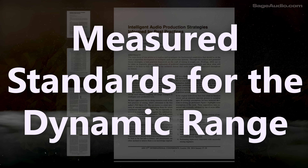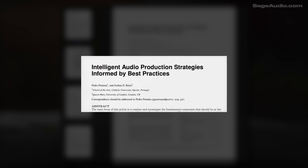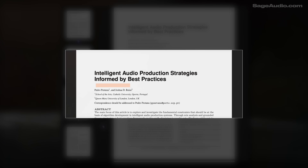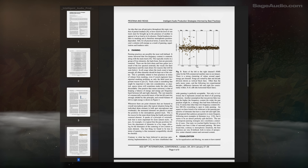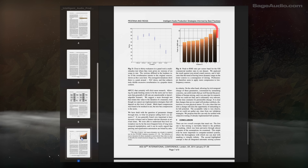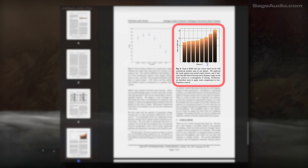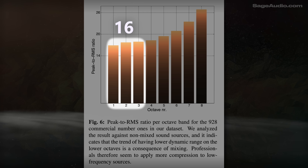First, let's consider measured standards for the dynamic range. In a 2014 paper written by Pedro Pastana and Joshua D. Rice, presented at the 53rd AES convention, the authors measured 928 commercially successful songs to find significant patterns. One finding shows the average dynamic ranges of each octave using a peak-to-RMS ratio. On average, the lowest range has the most compression, or at least the most controlled dynamic range, with a peak-to-RMS ratio of roughly 16.